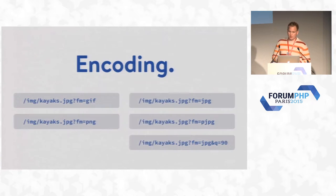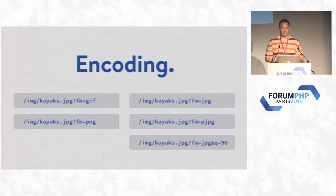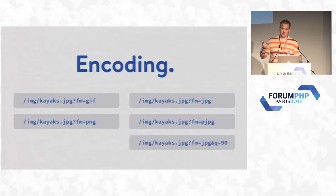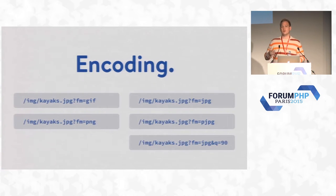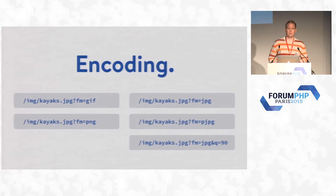It'll do filters like grayscale and sepia. And you can encode images in a bunch of different ways: JPEG, PNG, progressive PNG, GIF, and progressive JPEG. If you're using a JPEG image you can pass through the quality as well. By default I believe the quality is set to 90, which is a bump up from the GD default. So you can control all that stuff.